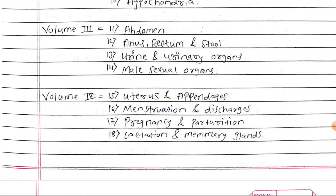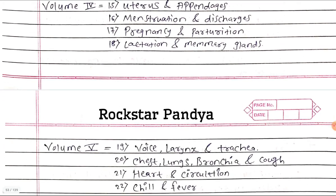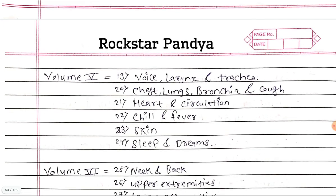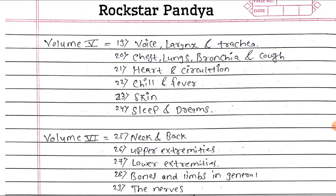Volume 4 includes: 15th — uterus and appendages, 16th — menstruation and discharges, 17th — pregnancy and parturition, and 18th — lactation and mammary glands. Volume 5 contains: 19th — voice, larynx and trachea, 20th — chest, lungs and bronchia and cough, 21st — heart and circulation, 22nd — chill and fever, 23rd — skin, and 24th — sleep and dreams.